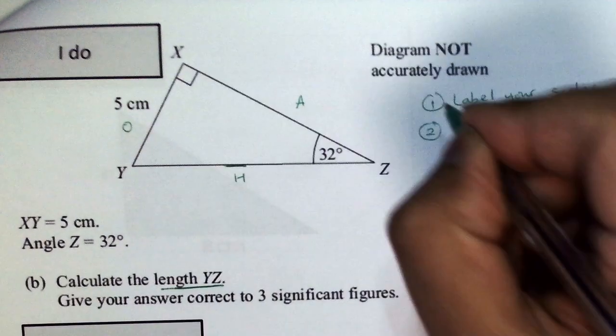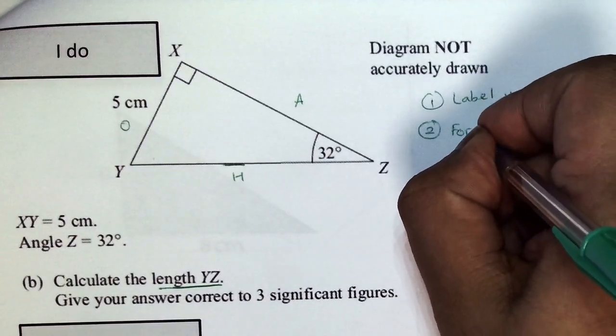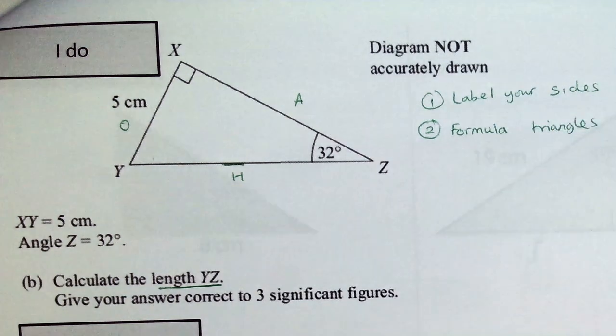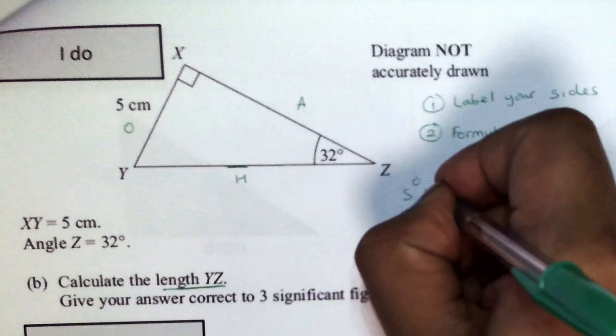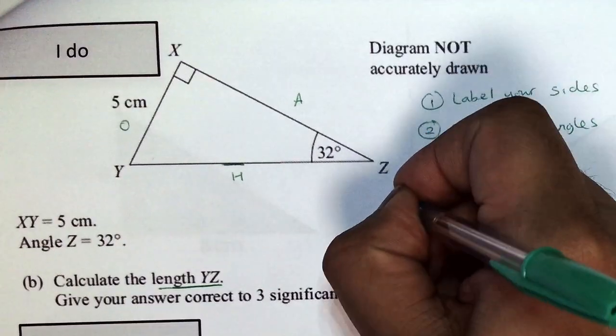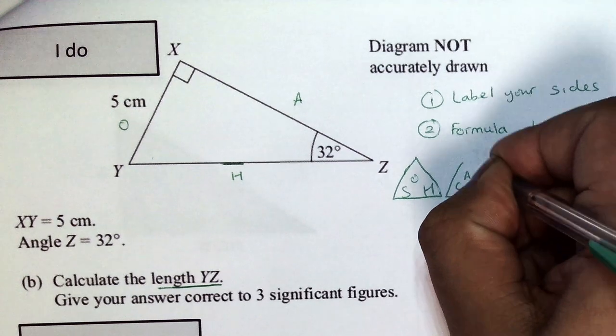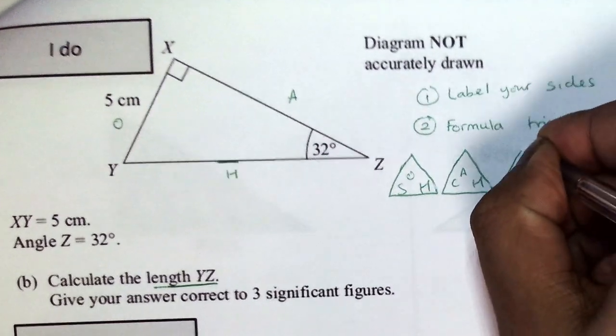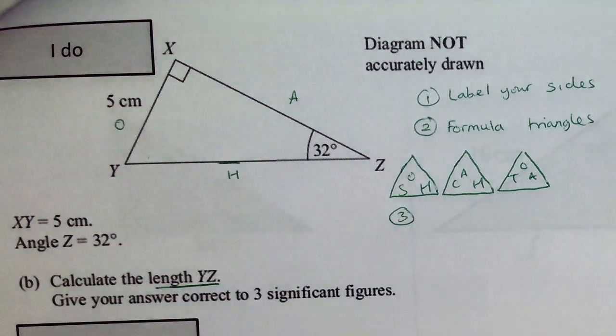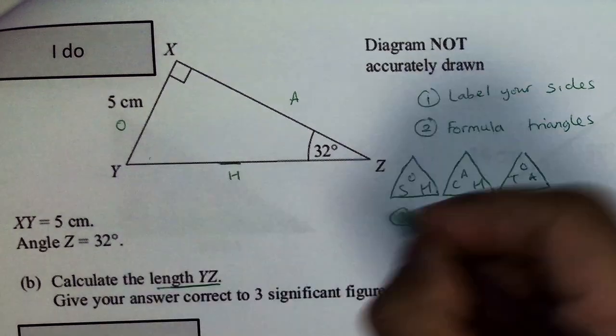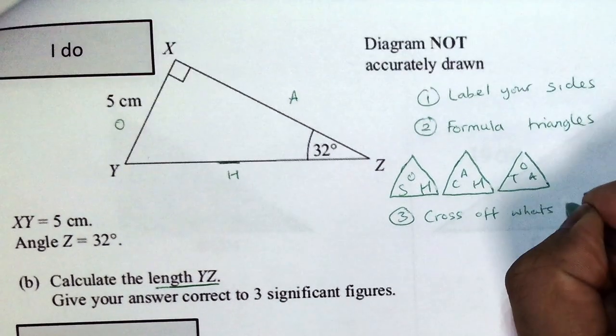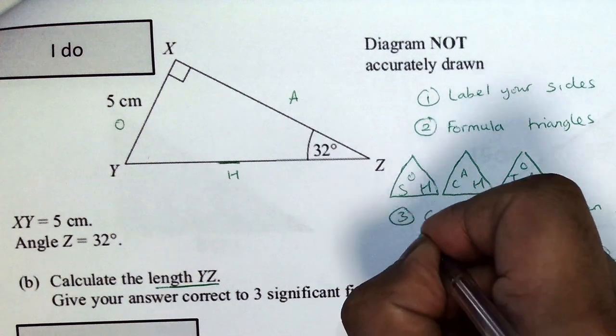Step two. Right at your formula triangles. So, the way we just remember this is suck it away. Or somehow cracked all her teeth on an apple. So, that's my three formula triangles. Step three. You're going to cross off.